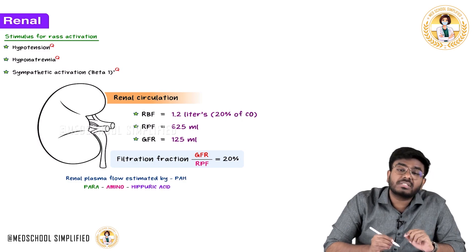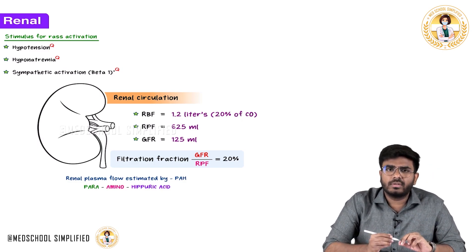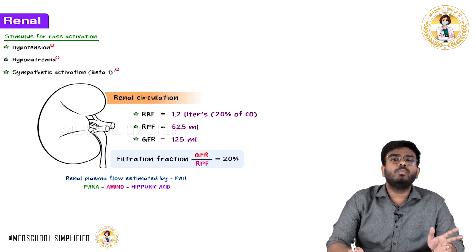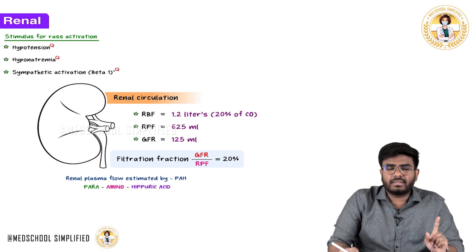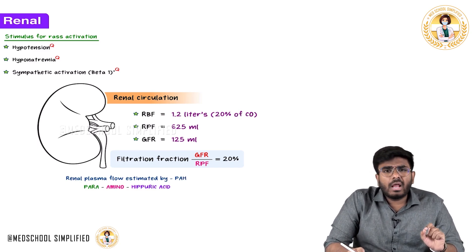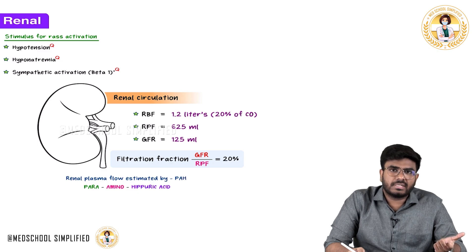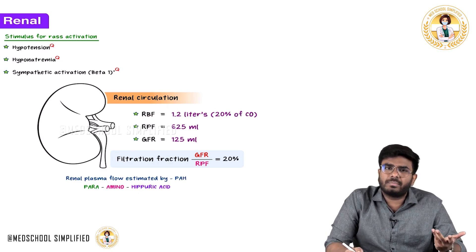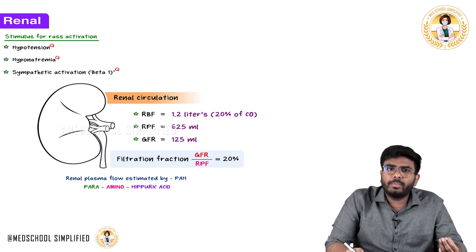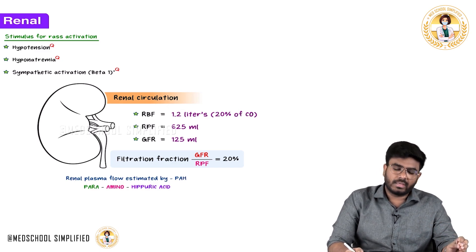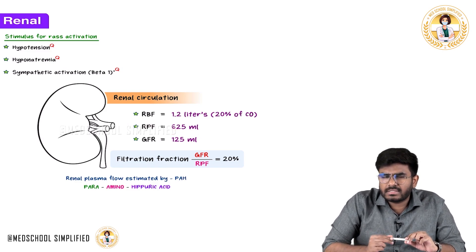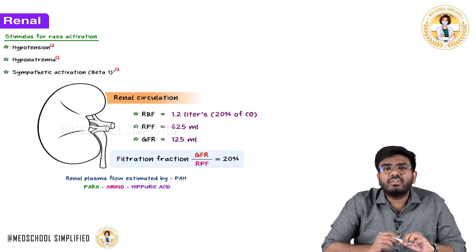Kidneys receive almost 20% of the cardiac output. Cardiac output is about 5 liters, so 20% means approximately 1 liter per minute going to both kidneys. Out of this 1200 ml, plasma is 60%, so the renal plasma flow is 625 ml.